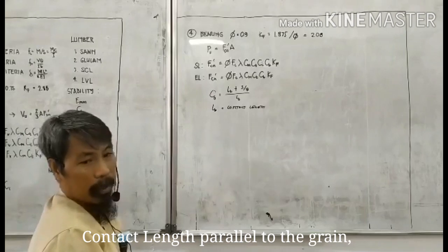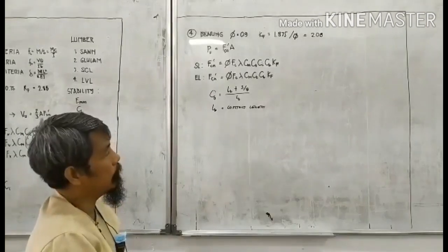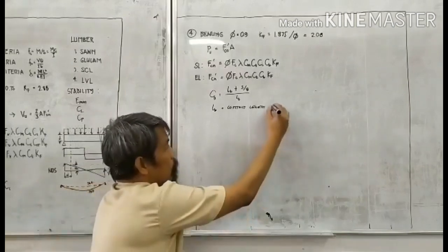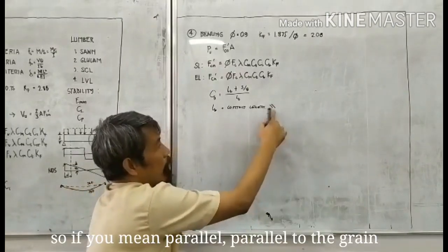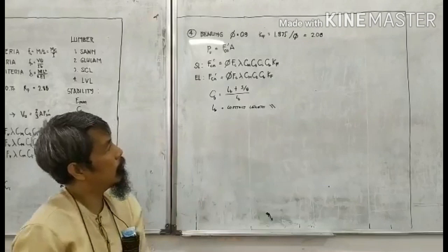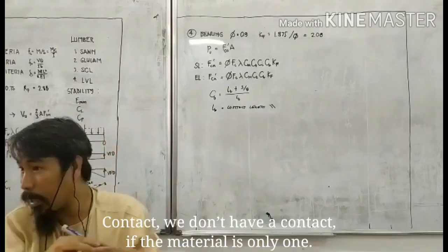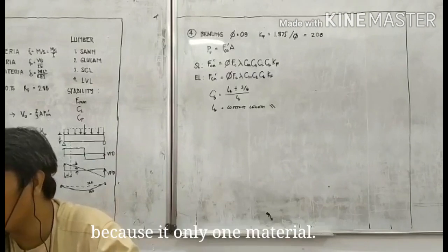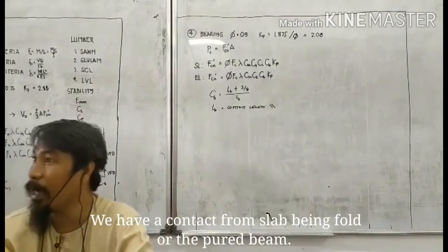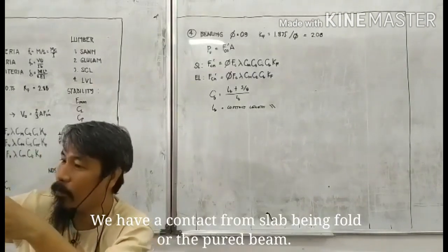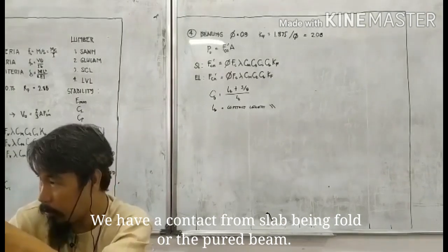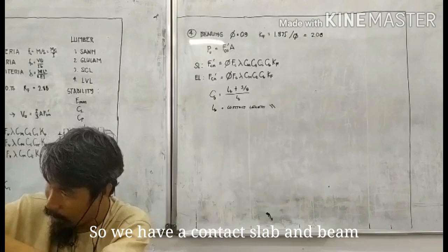Contact length, parallel to the grain. So that is what, parallel. So what we are doing is parallel to the grain. Contact. We don't have a contact if the material is only one. We have a contact from the slab being placed on a pure beam. So we have a contact from the slab.